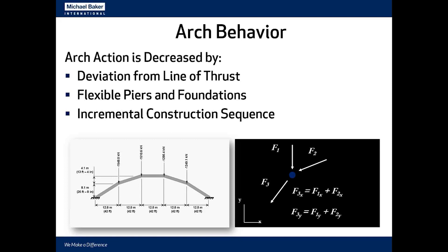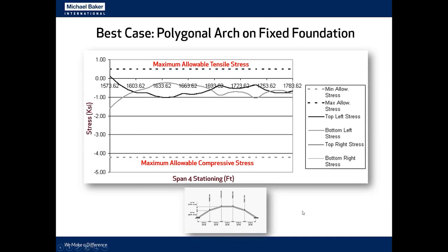However, ideal arch action is decreased when the actual arch profile deviates from the line of thrust, when there are flexible piers and foundations so the end conditions are not fully fixed, and when there is an incremental construction sequence. All of these factors result in the load being carried by a higher proportion of bending moment and a lower proportion of axial force.